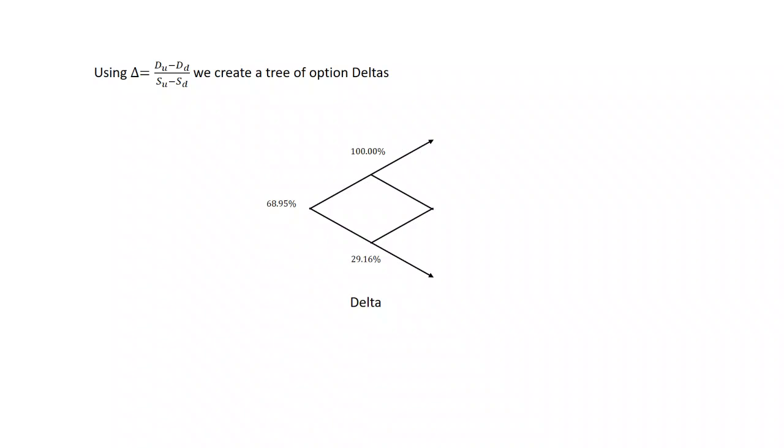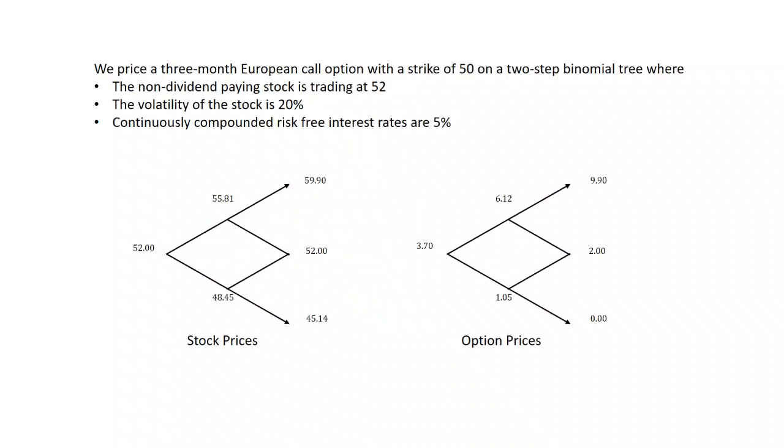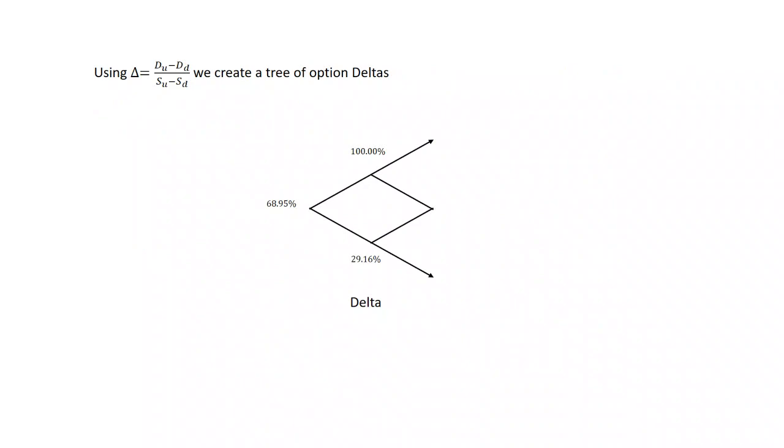Here is where the delta comes in. We're going to use delta equals D sub U minus D sub D over S sub U minus S sub D. We can create a tree of option deltas. We take the option prices on the right, the stock prices on the left, and we do this calculation. We can do it in three places, and we get a delta of 68.95 at the beginning, the first node of our tree, 100% if the stock goes up, and 29.16% if the stock goes down.